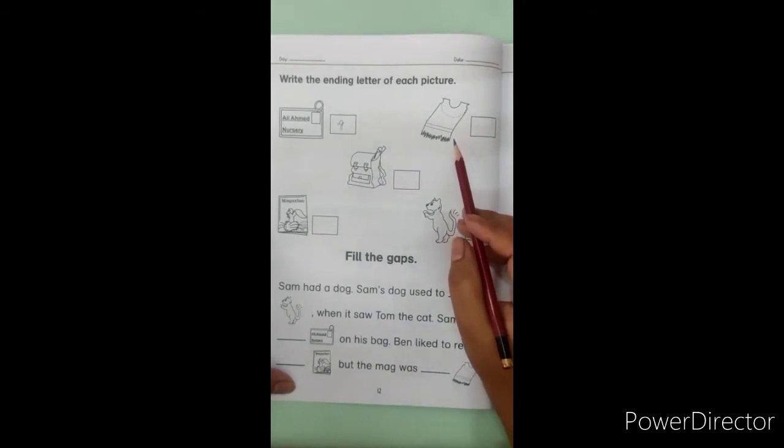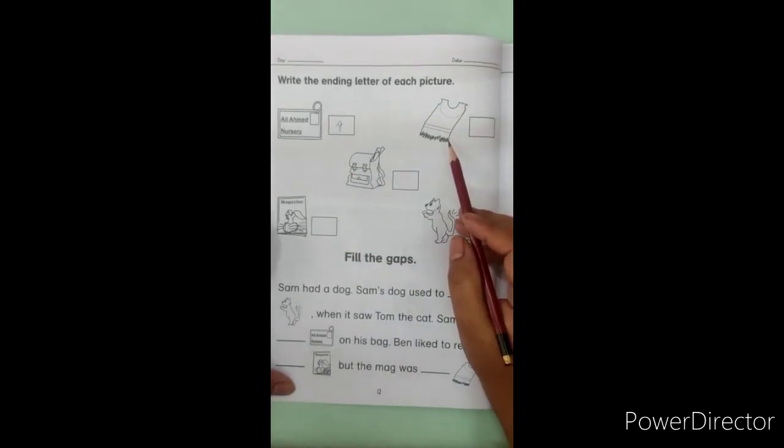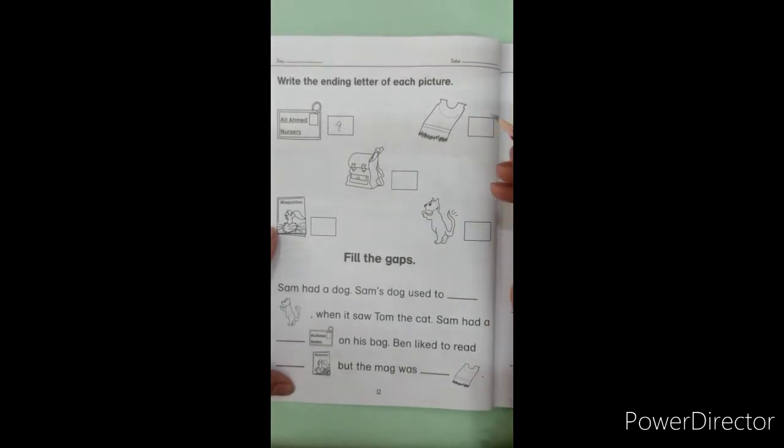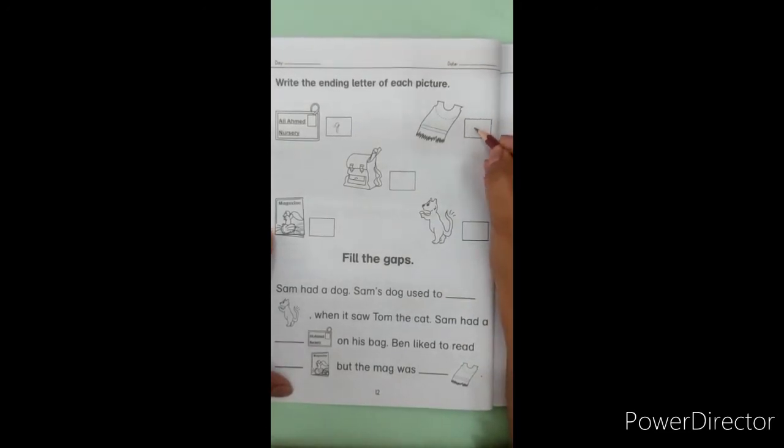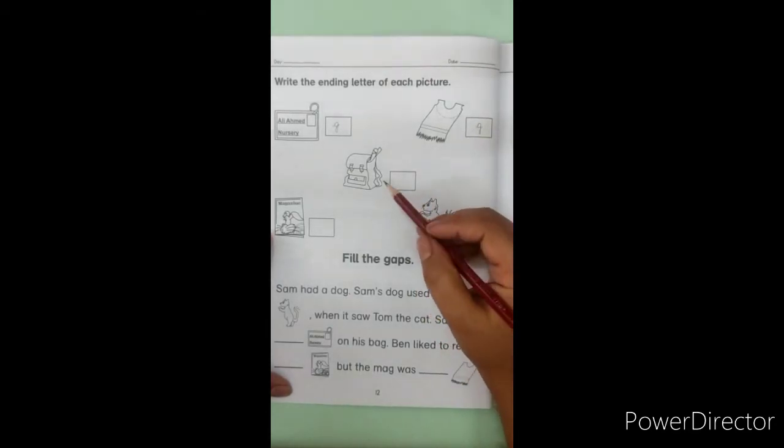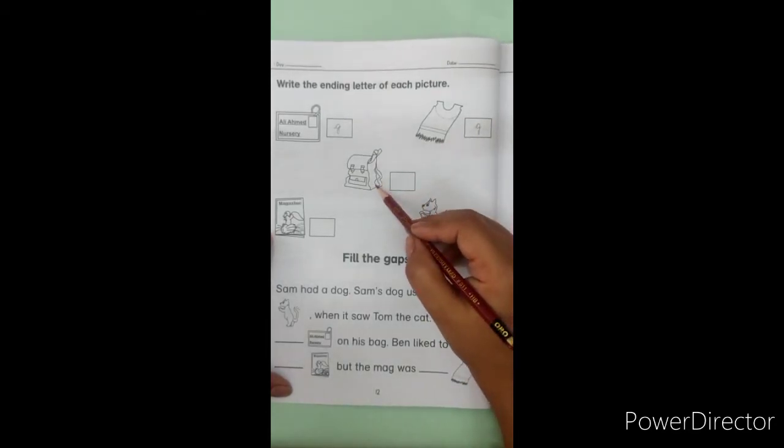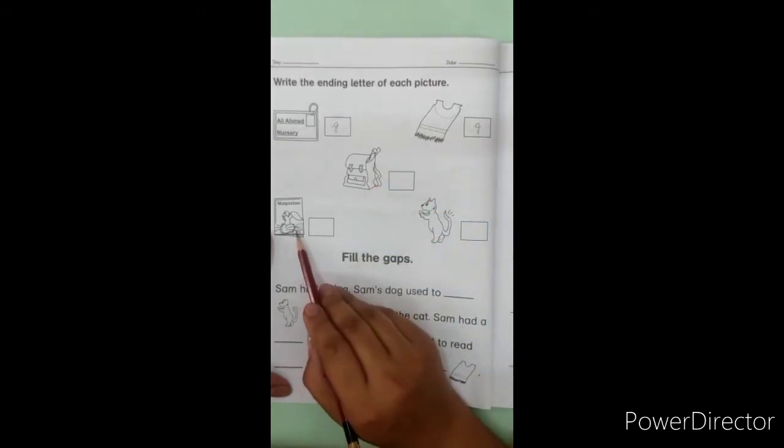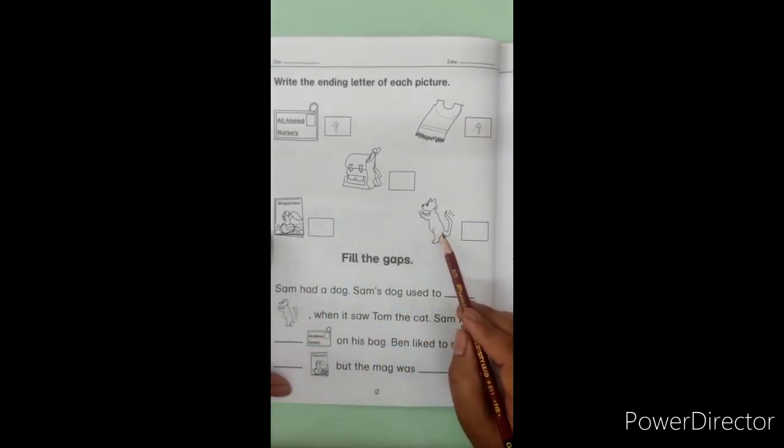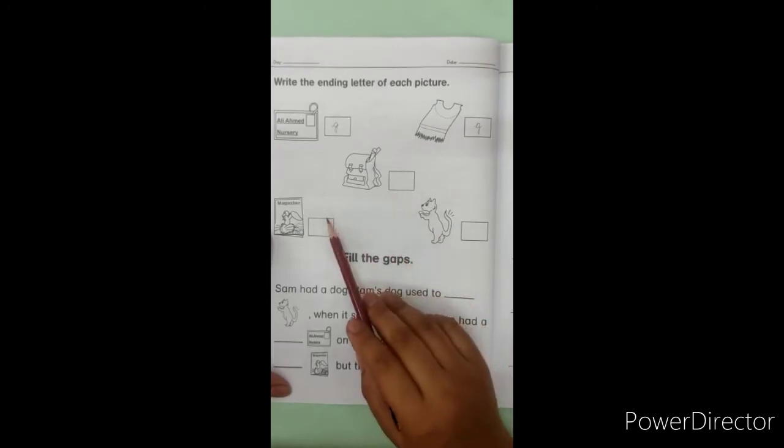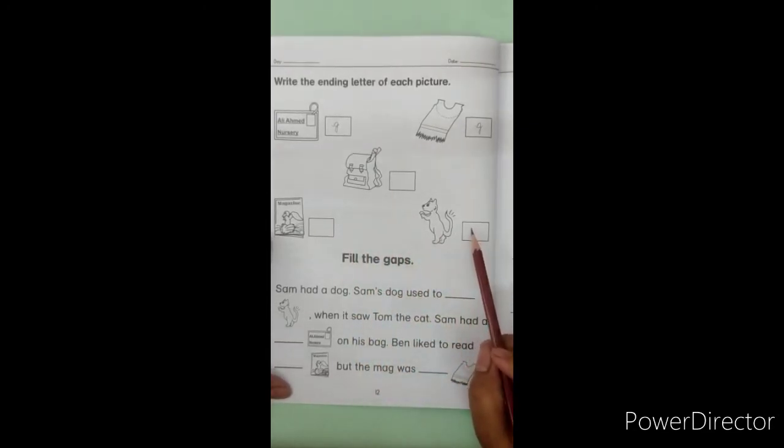Which picture is this? Rag. So what ending sound is coming? G. Which picture is this? Bag. This also has G coming. Mag. Mag also has G sound at the last. Ending sound. And wag. What ending sound is coming in wag? G. So you all have to write G here in neat handwriting. Okay?